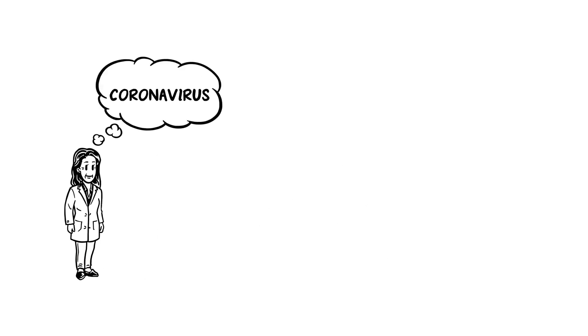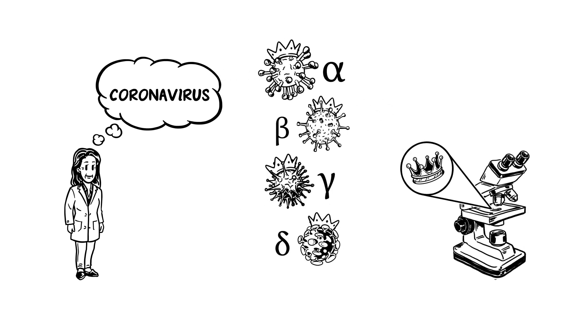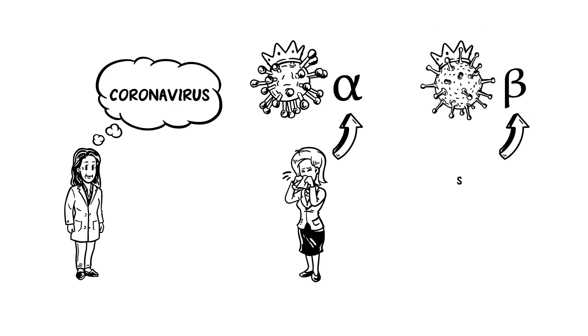coronavirus is a term used to describe a group of viruses that look like crowns under the microscope. The virus for common colds is categorized as alpha coronavirus, while the current outbreak falls under beta coronavirus, similar to SARS and MERS, which pose serious health threats.